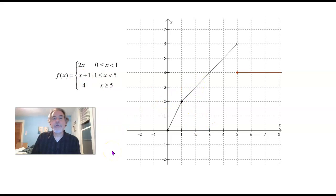What's f of 5? Well now we're down to here. 5 falls into the greater than or equal to 5 category, and so what we get out is 4. What's f of 6? 4. What's f of 7.3? 4. f of anything greater than or equal to 5 is always going to be 4.